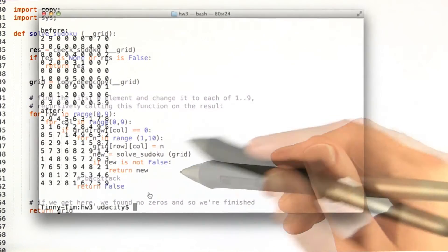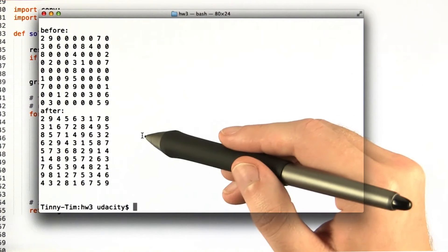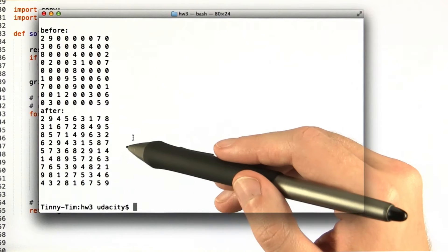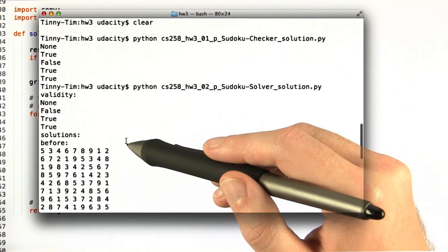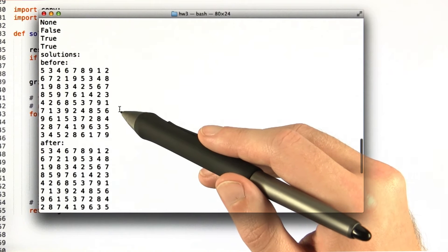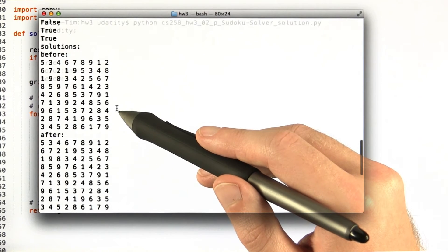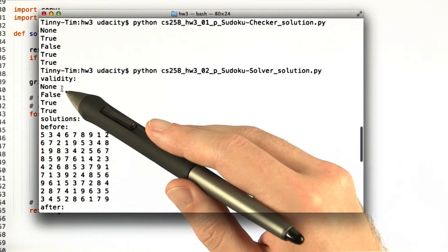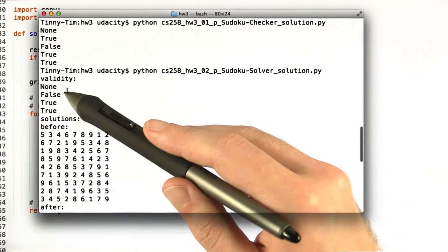Just to check real quick, let's check that my solution actually works and this is for all of the inputs that we gave as example test cases. You can see that it does verify that the first two, the ill-formed and invalid ones, didn't work.